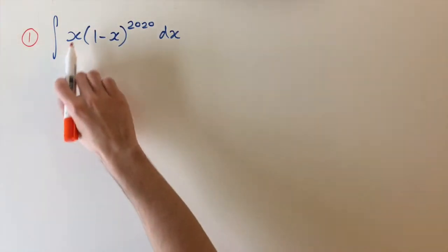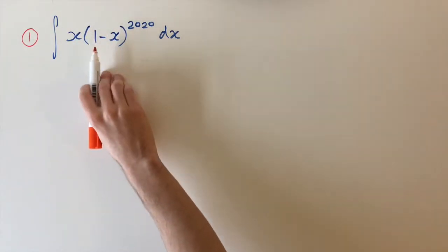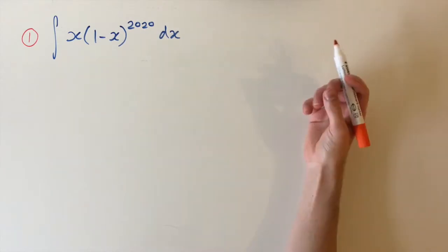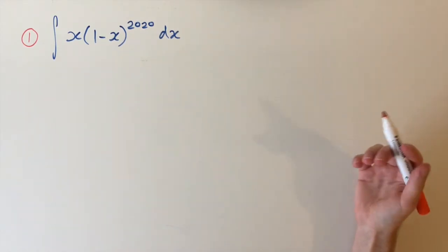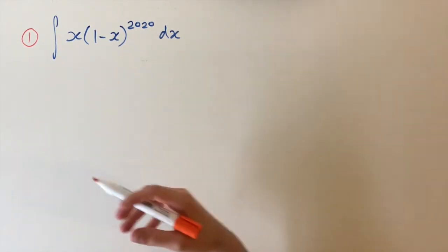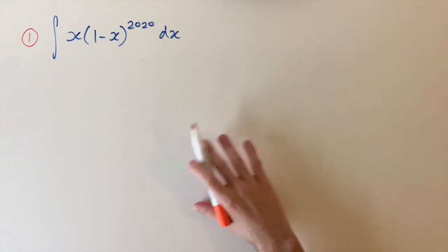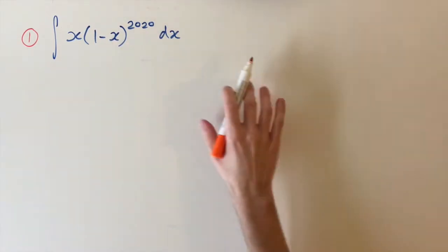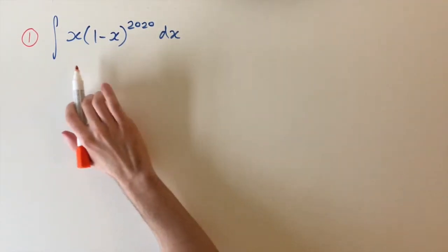We're looking at the integral of x times (1 minus x) raised to the power of 20. There are loads of ways to tackle this. I'm going to show three different solutions that I thought were the most straightforward. The first one is a substitution method.